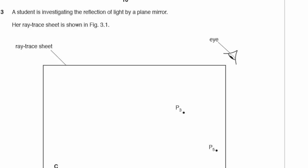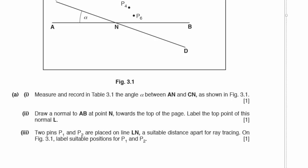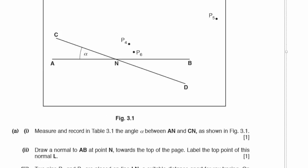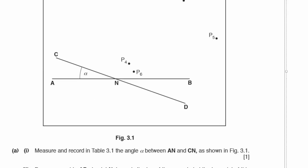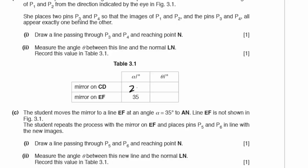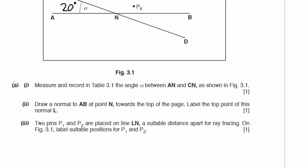Question 3. A student is investigating the reflection of light by a plane mirror; the ray trace sheet is shown in figure 3.1. Part A1: measure and record in table 3.1 the angle alpha between AN and CN as shown. I measured that angle and got 20 degrees. Part A2: draw a normal to line AB at point N towards the top of the page and label the top point L.